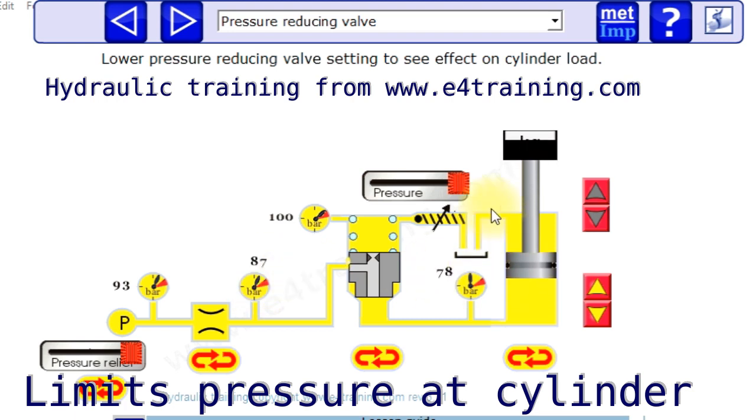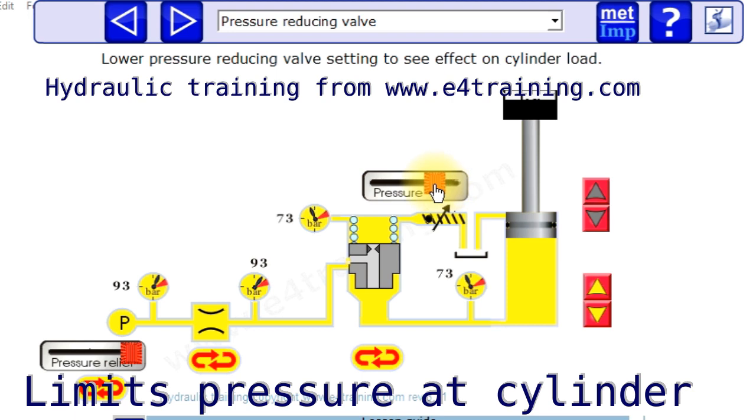...around 90 bar where our load's lifting. Now we've got a reducing valve, so at the moment we've got the same pressure right the way through the valve. But if we open our reducing valve, so we've got a little pilot here that we're controlling the pressure on the pilot, and now we can see we've set that to 50 bar.